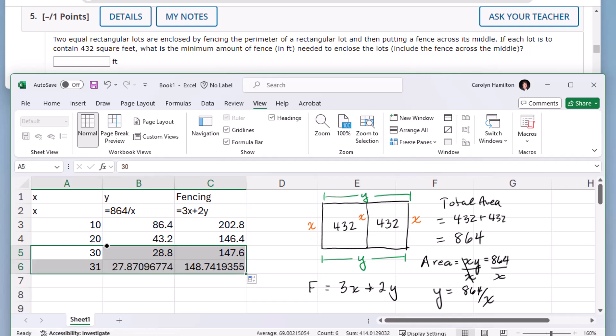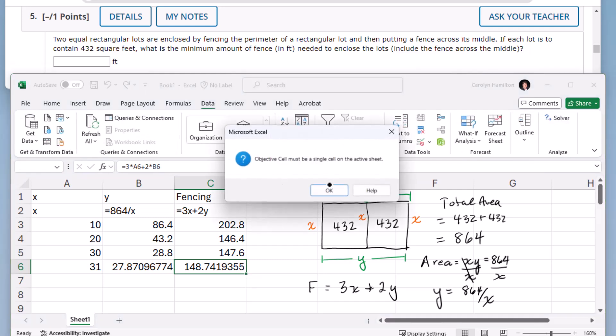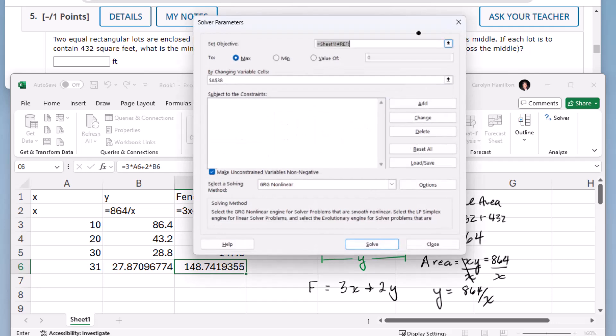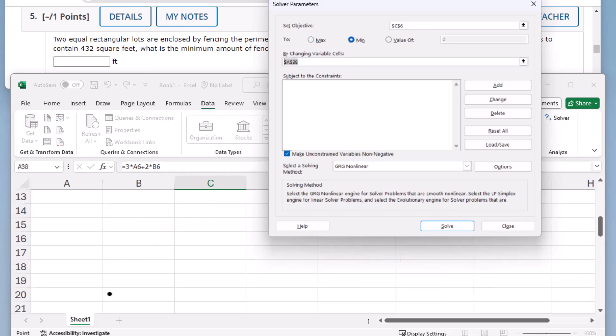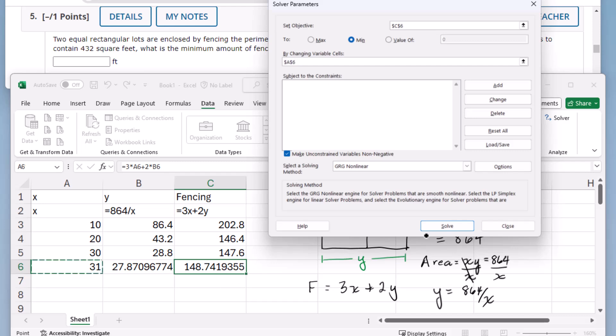I'm expecting my minimum to be somewhere, I don't know, between 10 and 30 is all I know right now. But let's pull up solver, okay, solve for this cell to be a minimum by changing that cell.